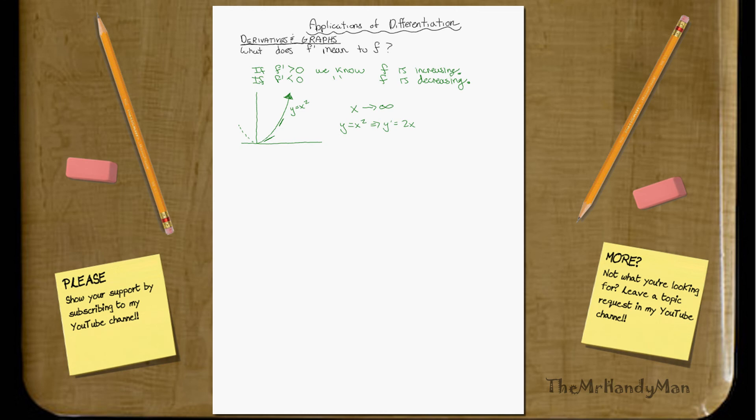So, essentially, as x goes to infinity, we find that y prime also goes to infinity. And it's, essentially, that just means that this slope will get higher and higher. So, the slope will get larger and larger.